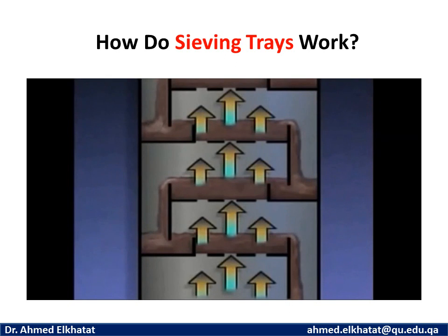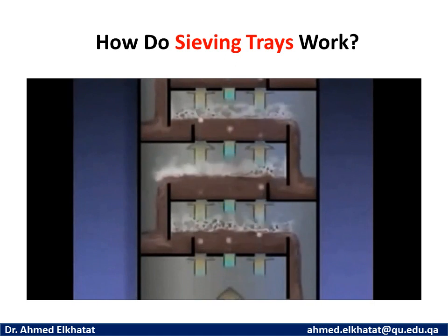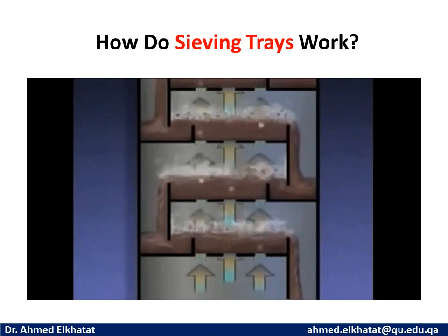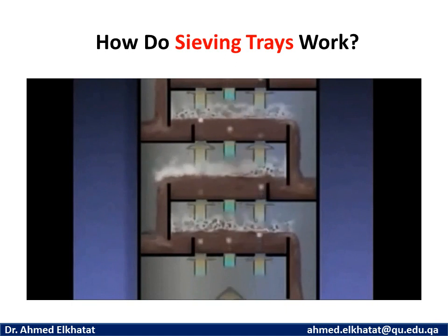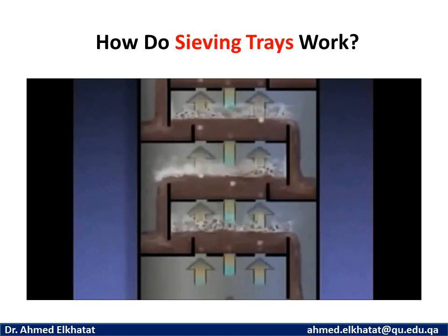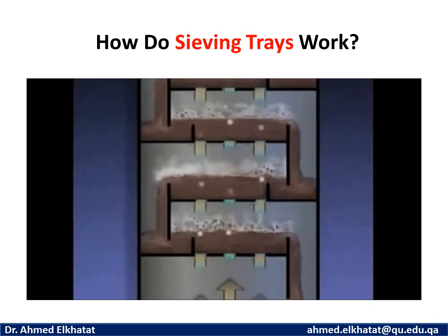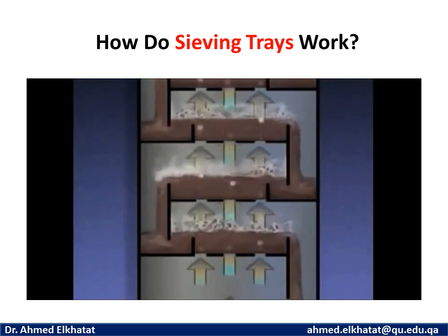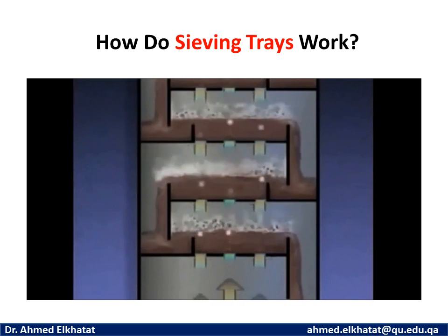When the upward moving vapors and the downward flowing liquid come in contact on each tray, the vapors transfer some of their heat to the liquid. The heavier components of the vapors become cooler and condense into liquid, and the lighter components of the liquid boil. The vapors then rise toward the next tray. As this process continues, the rising vapors contain a higher concentration of lighter components and a lower concentration of heavier components.